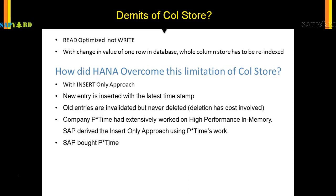The second demerit is that the secondary index limitation is inherited in column store as well. So if the value of one row in the database is changed, then the whole column store has to be reindexed, as the address of the data changes. Reindexing is a burden to the database and puts additional cost on memory and usage.